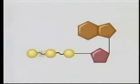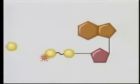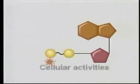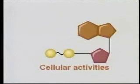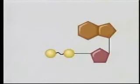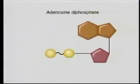Breaking the first high-energy bond in ATP releases energy and a free phosphate. This energy is used to power cellular activities. Adenosine with only two attached phosphate groups is called adenosine diphosphate, or ADP.